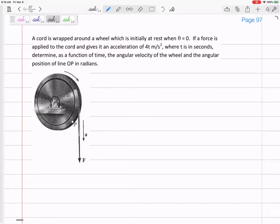So this cord is wrapped around a wheel, which is initially at rest when theta is equal to zero. If a force applied to the cord gives it an acceleration of 4t, so this cord is moving down with an acceleration of 4t. That is not constant, correct? That's not a constant acceleration. But the cord is going around with an acceleration of 4t.